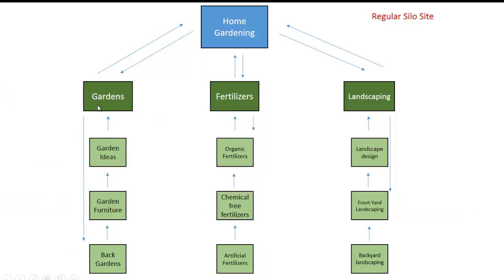So these in green here, you can look at them as your main silo landing pages or category pages. Articles that are posted in these main silo landing pages are all going to be about gardens, fertilizers, or landscaping, and they're going to be posted as their particular supporting article. But the problem with this is that everything we put on the site is all created to rank our main silo landing pages.